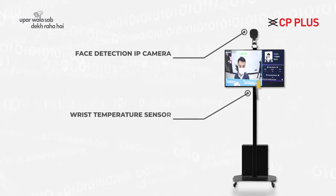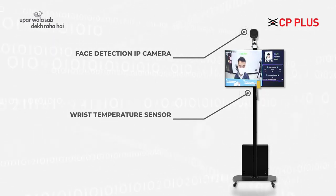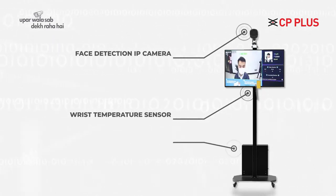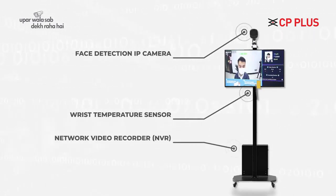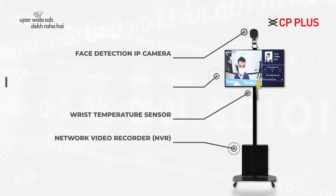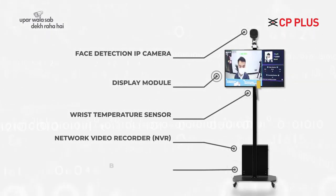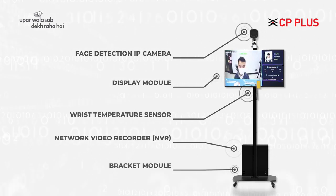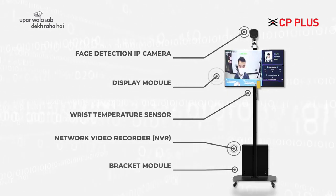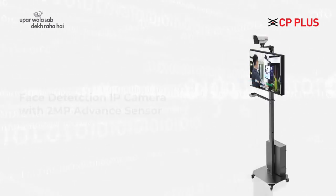The second module of this standalone solution is a temperature measurement sensor, which gives the accurate temperature of a person. The third module is an NVR, which does the recording and gives a live feed with instant notifications. The fourth module is a display module, and the fifth module is a bracket in which we install all these components.